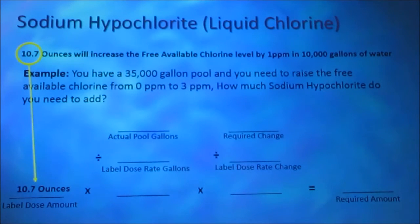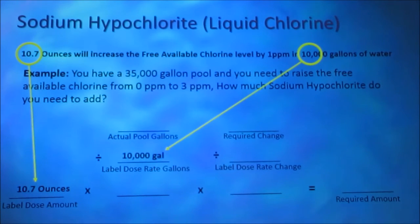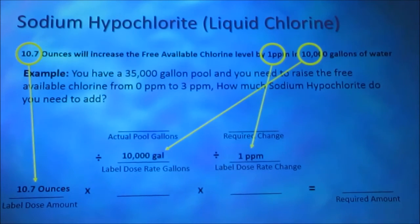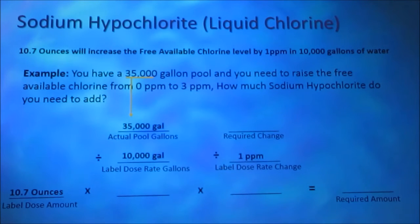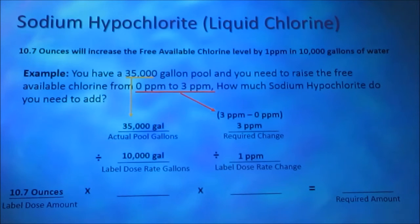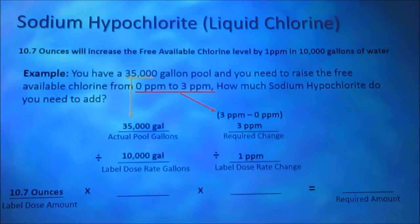Our label dose amount is 10.7 ounces. Our label dose rate gallons is 10,000 gallons. Our label dose rate change is 1 part per million. Our actual pool gallons is 35,000 gallons. The required change we're looking for is 3 parts per million. We're at zero and we want to be at 3 parts per million. 3 minus 0 is 3 parts per million.